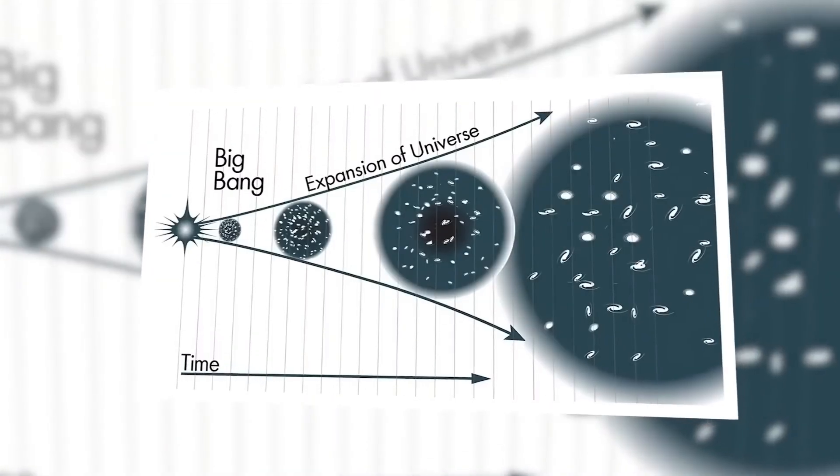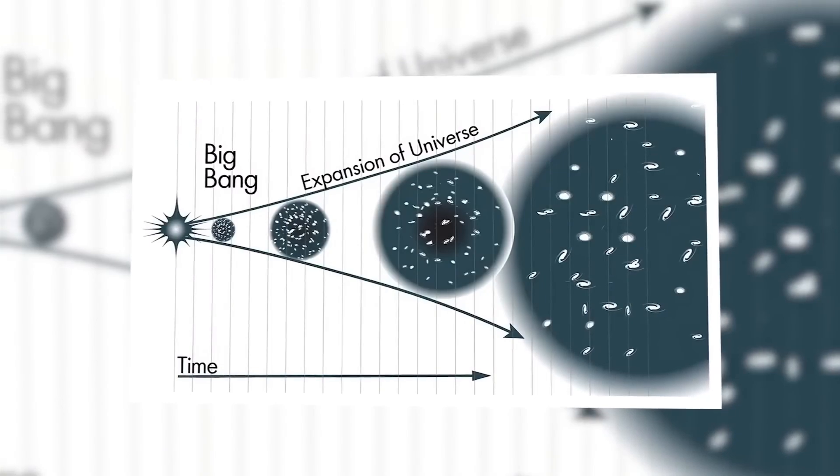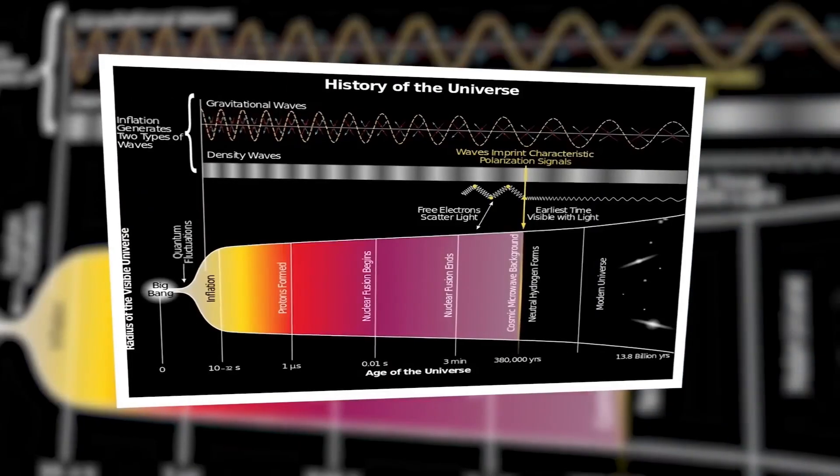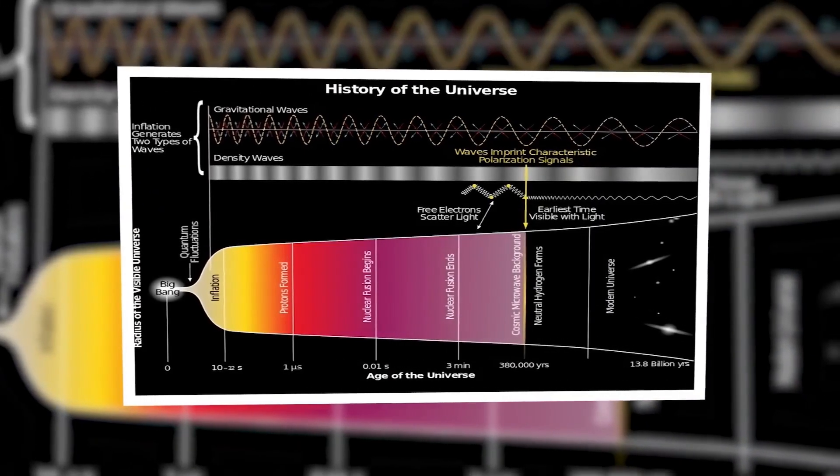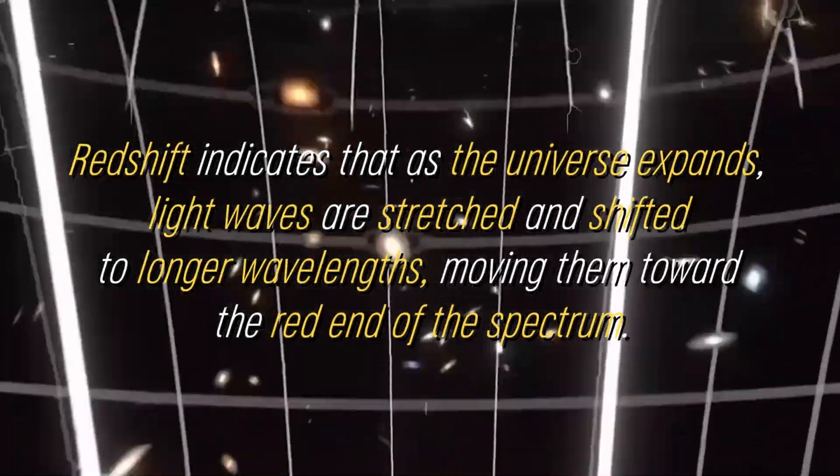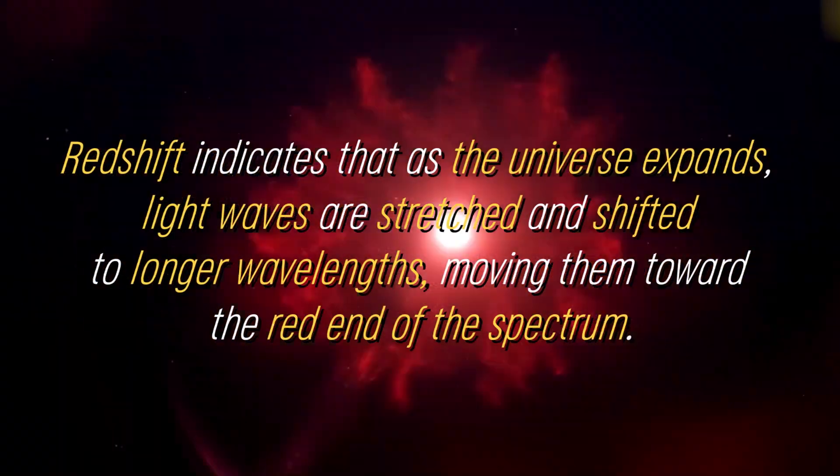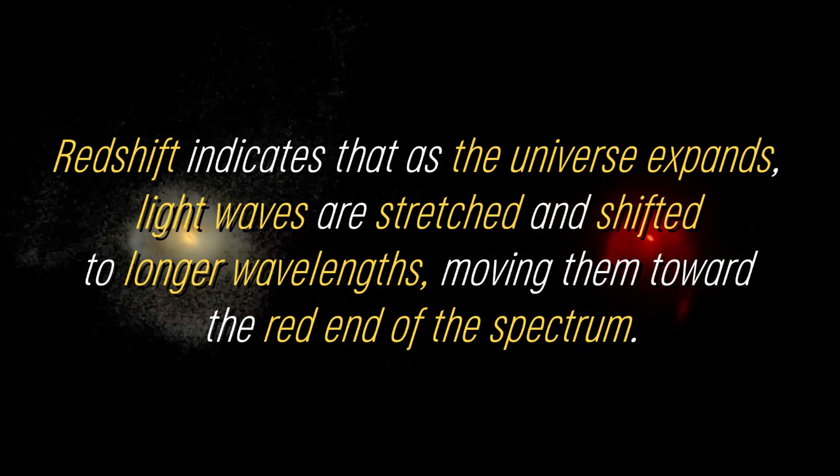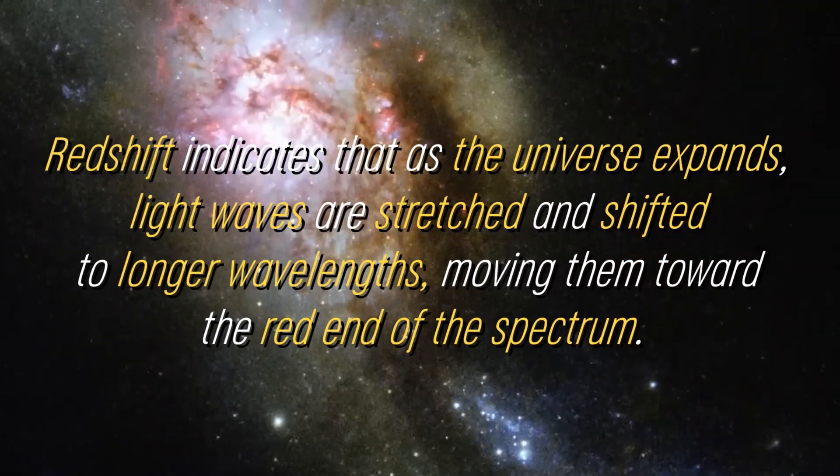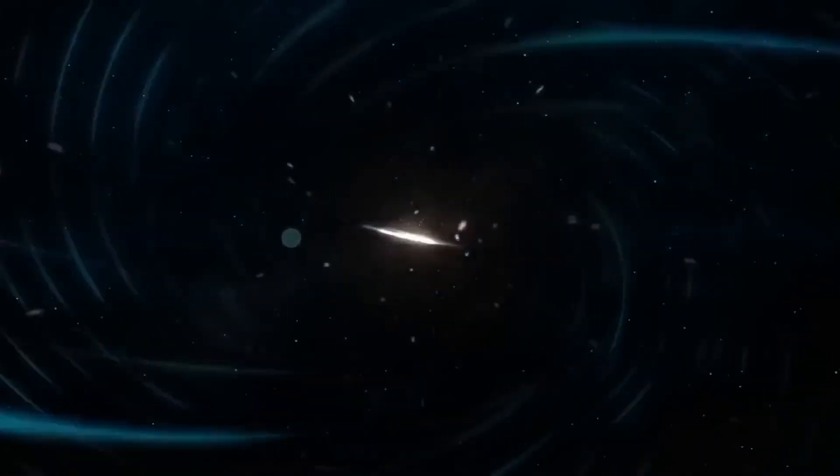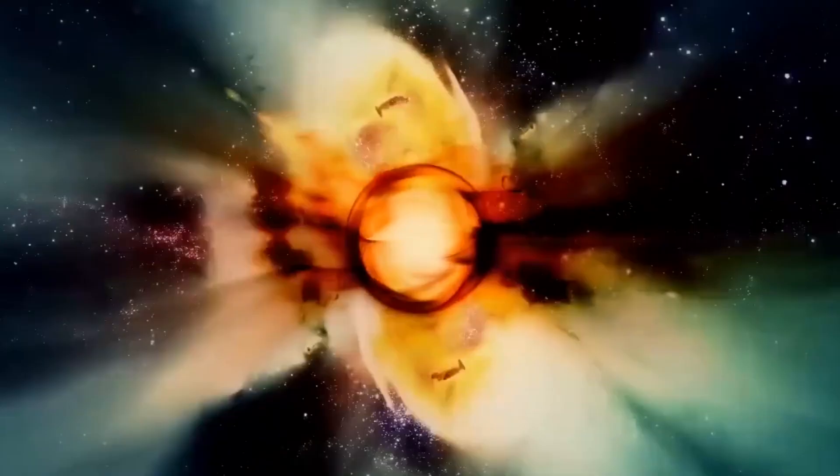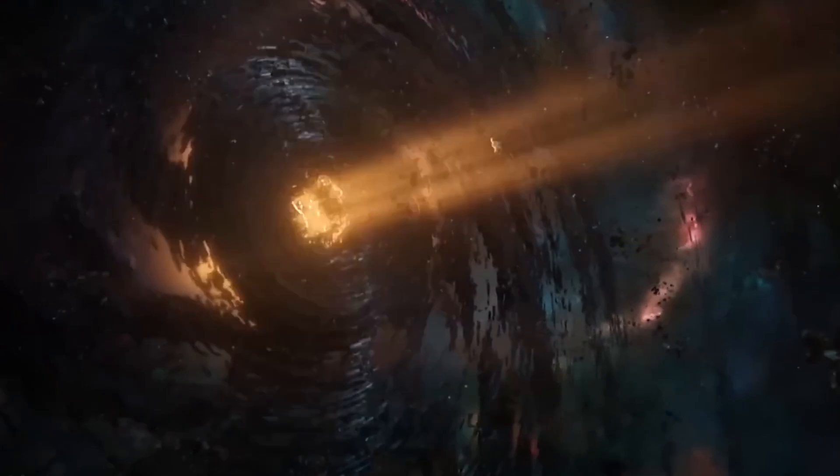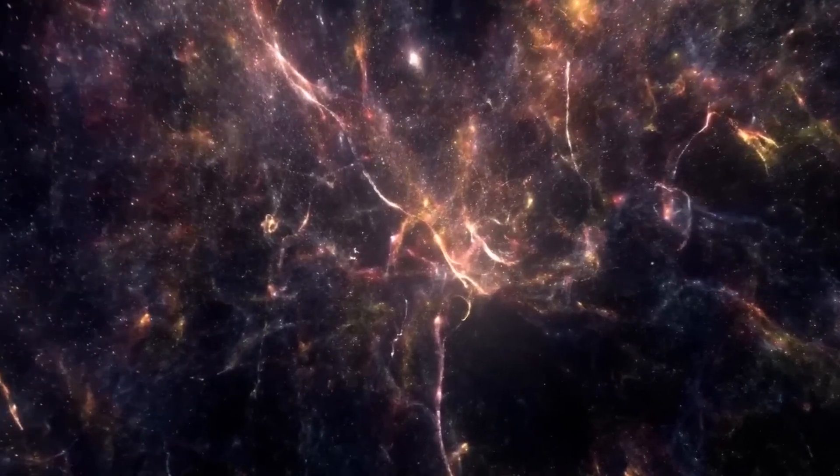Scientists have observed the effects of this expansion through various observations, such as the redshift of light from distant galaxies. Redshift indicates that as the universe expands, light waves are stretched and shifted to longer wavelengths, moving them toward the red end of the spectrum. During the expansion, all the stuff that makes up our universe was compressed into an incredibly small volume. It was clear that matter could not survive in such a compact space, so transformations occurred as the universe expanded and cooled.